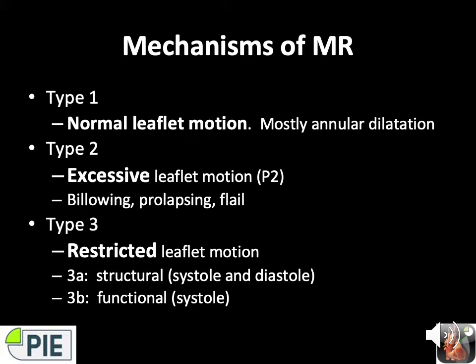Type 3 is restricted leaflet motion with two subtypes. Type 3A is structural — the leaflet is affected in both systole and diastole, usually with rheumatic disease. Type 3B is functional — the leaflet is affected in systole only, due to tethering as a result of LV changes such as dilatation. It can occur with regional wall motion abnormalities, annular or LV dilatation, and is particularly sensitive to loading conditions — seen in ischemia, LV dysfunction, or remodeling.